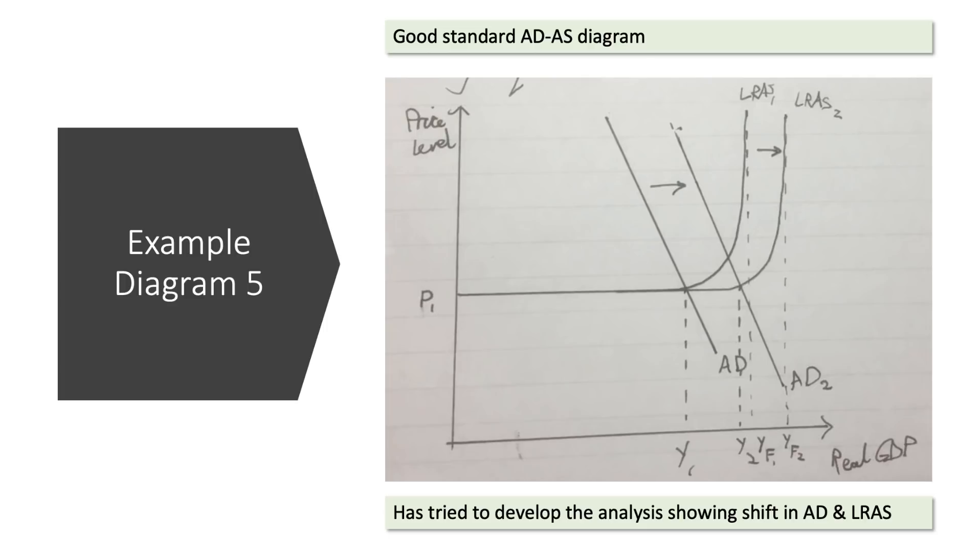This is a macro diagram, a good standard, nicely drawn. I should say general price level, but we'll forgive the student for that. Real GDP correctly labelled on the x-axis. And critically, they've tried to develop the analysis, in this case, shifting both demand and long-run supply. I think this was a question about government spending on infrastructure or successful policies to raise wages and productivity. Either way, it's a nice clear diagram showing an outward shift in both aggregate demand labelled and also in long-term aggregate supply. A good diagram, it's a good standard one. I've seen much worse than that in the mocks I've been marking and it does the job nicely. And the key point here is that a good analysis diagram really sets you up for strong analysis.